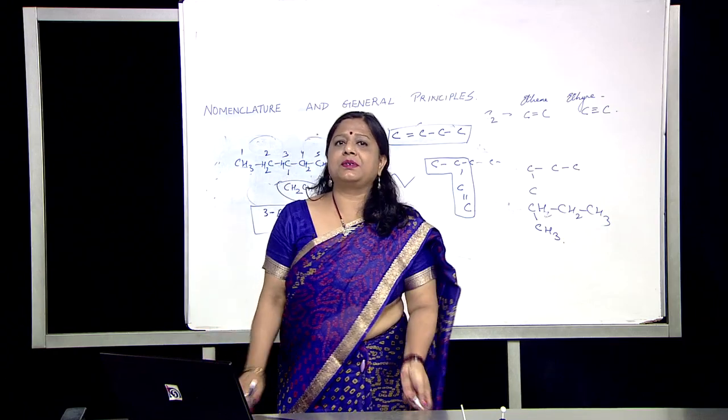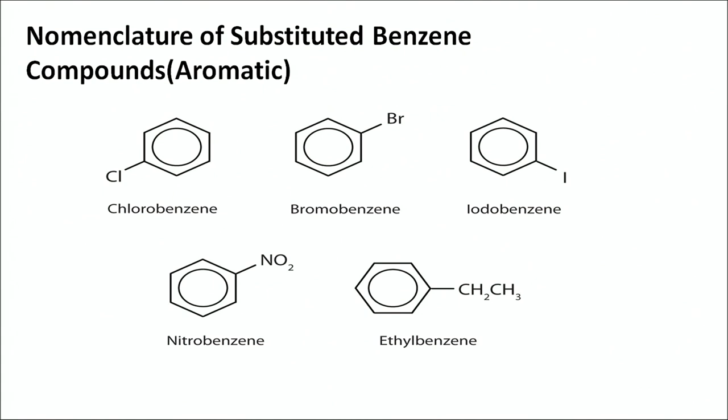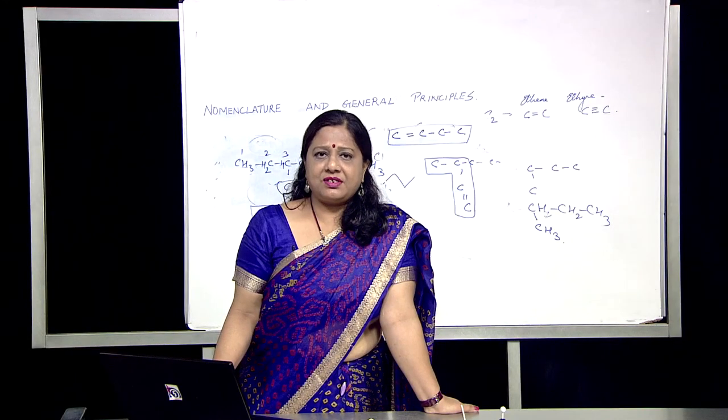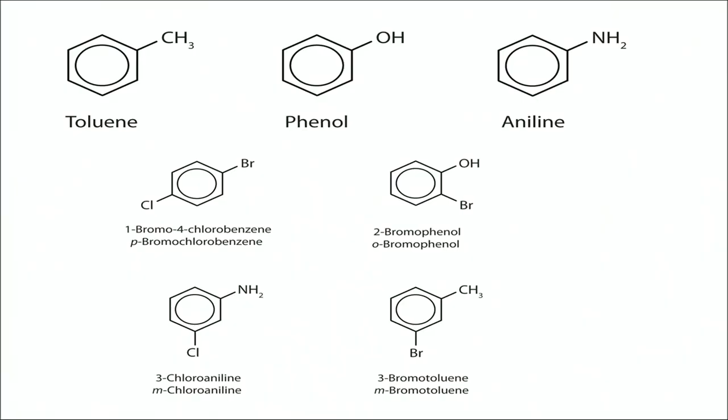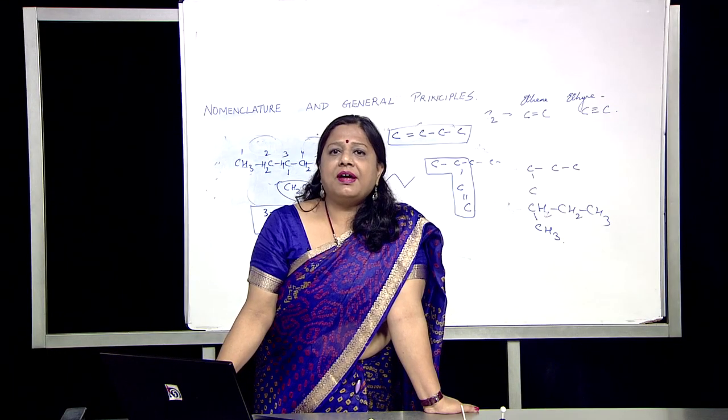For nomenclature of cyclic hydrocarbons (alicyclic hydrocarbons): examples include cyclopropane, cyclobutane, cyclopentane, cyclohexane, cyclopentene, and 1-ethyl-2-methylcyclobutene. For aromatic compounds related to benzene: adding chlorine gives chlorobenzene, bromine gives bromobenzene, iodine gives iodobenzene, NO2 gives nitrobenzene, and an ethyl group gives ethylbenzene. These are benzene and its derivatives. Toluene is also called methylbenzene; phenol is hydroxybenzene; aniline is aminobenzene. These are aromatic compounds also accepted by IUPAC.